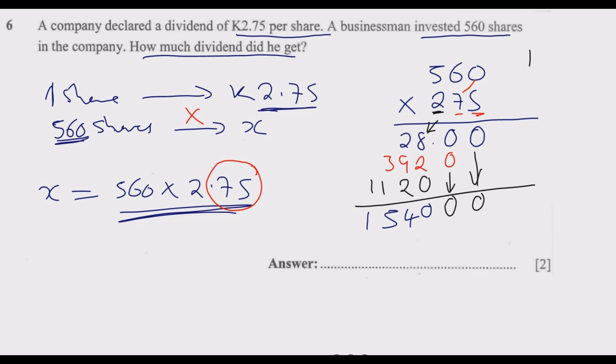Then remember, I said we need to recover these two decimal places. So it's going to move 1, 2. So our answer is here, which is 1,540 kwacha as the answer. So this is the quickest way and the safest way to deal with decimal places over large numbers.